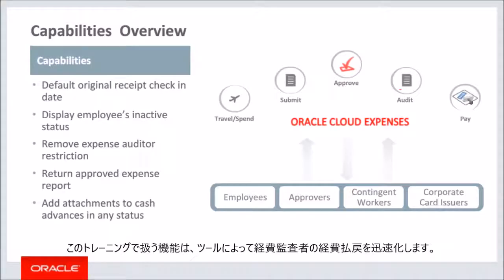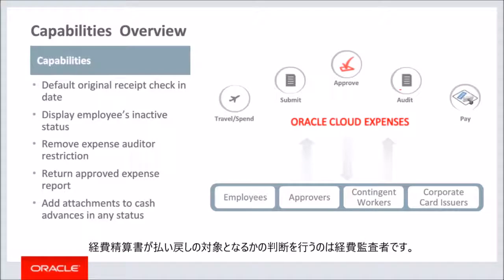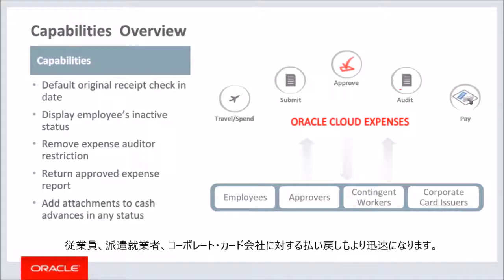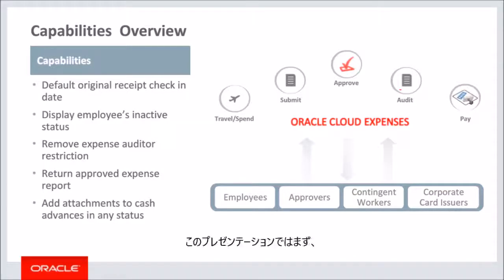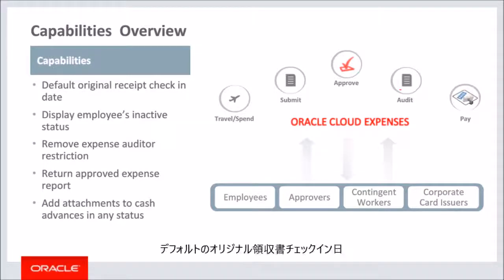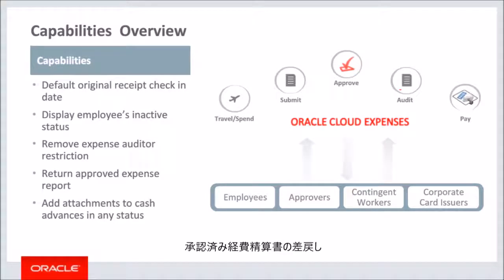The capabilities covered in this training will empower expense auditors with tools to expedite expense reimbursement. The expense auditor is the determining factor in whether an expense report is eligible for reimbursement. The more efficiently an audit is performed, the quicker the reimbursement is provided for employees, contingent workers, and corporate card providers. Efficiency in audit stems not only from the tools provided within the auditing task, but also from tools provided to end users. We will first discuss how the auditor's tasks have been enhanced: default original receipt check-in date, display employees in active status, remove expense auditor restriction, return approved expense report, and add attachments to cash advances in any status.